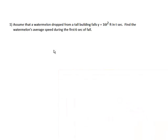They gave us an equation of 16 T squared. Any time we're looking for an average speed, we're looking for the stop part of the function minus the start part of the function, all over stop minus start.